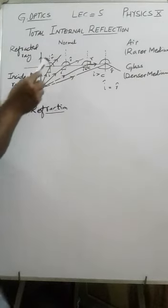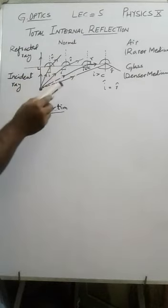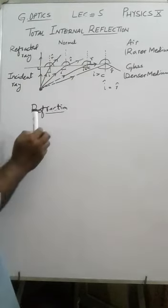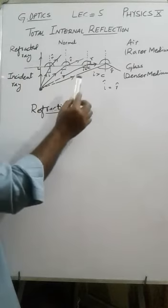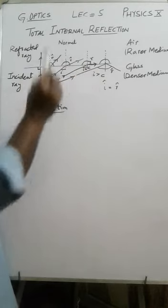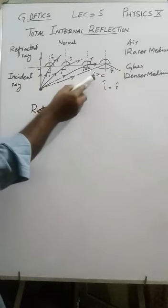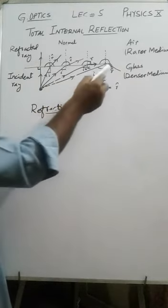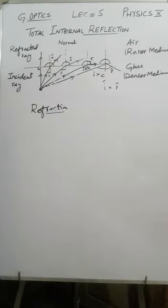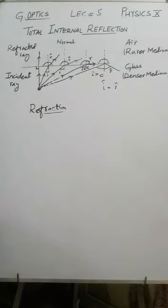To summarize: when a ray of light enters from a denser medium into a rarer medium, it bends away from the normal. As the angle of incidence increases, the angle of refraction also increases. The particular angle of incidence for which the angle of refraction becomes 90 degrees in the rarer medium is the critical angle. When the angle of incidence exceeds the critical angle, rays are reflected back into the same medium — this is total internal reflection.